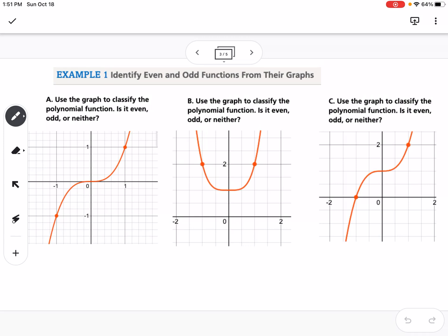So clearly this first one, a would be odd, because it has rotational symmetry, has its symmetry about the origin. B is even, because it has symmetry about the y-axis, and then C is neither, because it doesn't have y-axis symmetry, and it doesn't have symmetry about the origin.